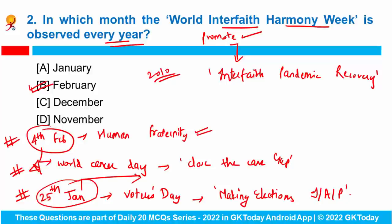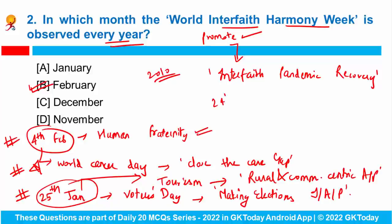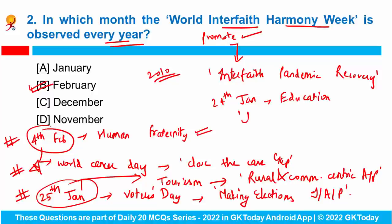On the same day, 25th of January, we celebrate National Tourism Day with the theme 'Rural and Community Centric Approach'. The 24th of January is observed as International Day of Education with the theme 'Changing Course, Transforming Education'. Now, you have to tell me when we celebrate National Girl Child Day — please answer in the comments.